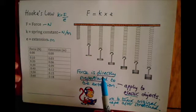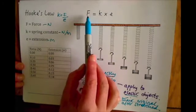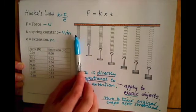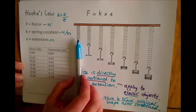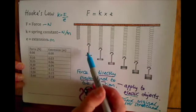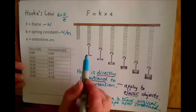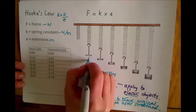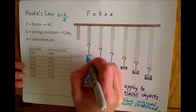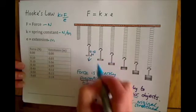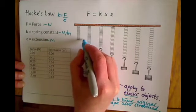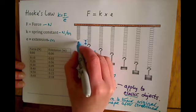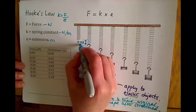We're going to talk about what it means to be directly proportional, and to do that we'll talk about force and extension and how we would measure this in an experiment. Here you can see a spring — at this point it is not extended at all and there is no mass applied to it. If we then apply a mass, and therefore by definition a weight, a force, to this, we're applying a downwards force to the spring. If we assume this is 0.10 Newtons, we can then measure the extension of that spring — in this case the extension might be 0.03 metres, for example.